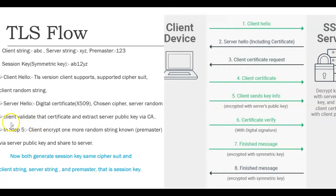Now we come to step 5, which is the most important. Before step 5, the client has already received the digital certificate from the server. The client sends that digital certificate to the CA — the Public Key Infrastructure authority — to validate it. It not only validates that it is a valid certificate and that no man-in-the-middle attack has happened, but also extracts the server's public key from the certificate. Note that ABC and XYZ have flowed in plain text, so an attacker monitoring the network may have ABC, XYZ, and the selected cipher suite.